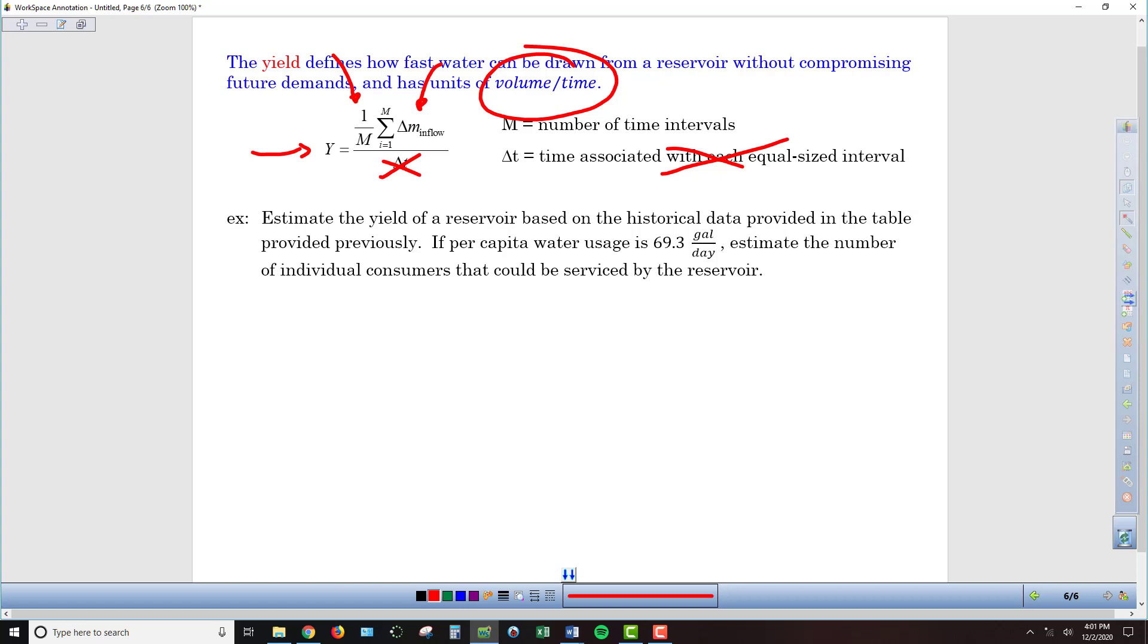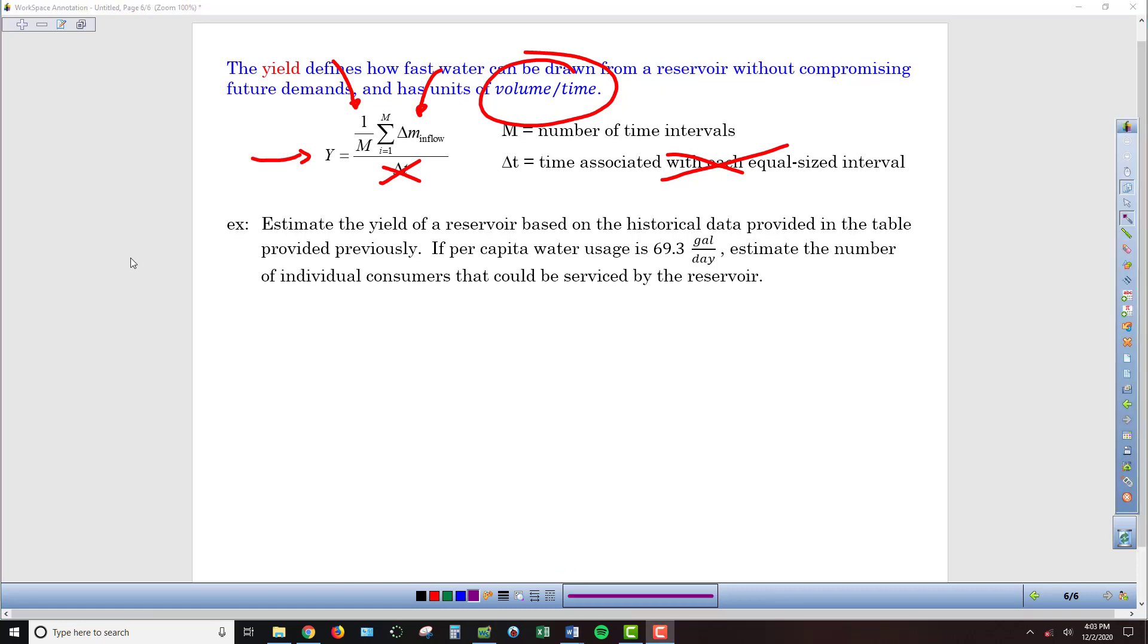We might take more than what this monthly yield is some months, but then there will be other months that we'll take out less. So what we have in front of us here is a problem that's going to require us to calculate the yield of a reservoir from some data that we used earlier, and then use that to answer a subsequent question for which there isn't a direct formula. We're going to have to piece it together based on the given information and the units of what's being asked of us.